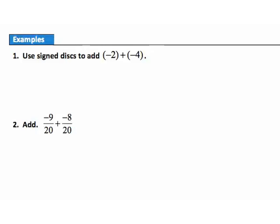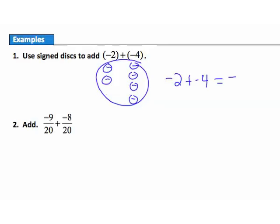Let's look at some examples to understand how to add numbers with the same sign. Example 1: use sign disks to add negative 2 plus negative 4. Sign disks represent each of the negatives. I have 2 negatives for the first number and 4 negatives for the second. So when I add negative 2 plus negative 4, I combine all the negatives — 2 here and 4 here — giving me 6 negatives altogether.